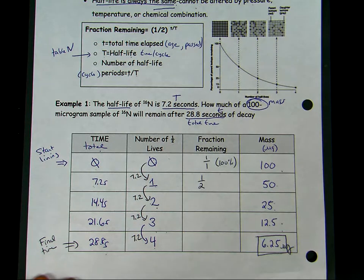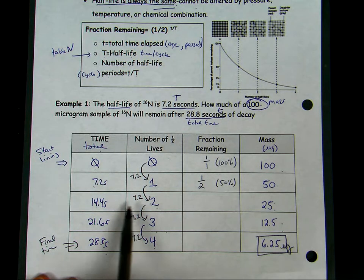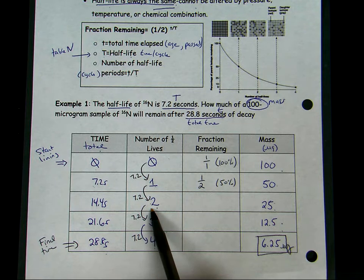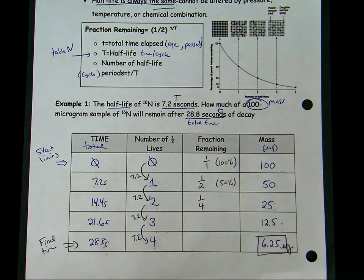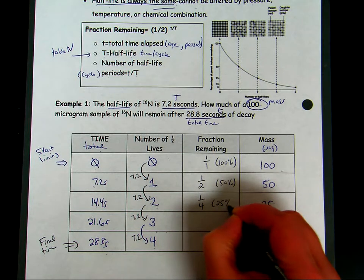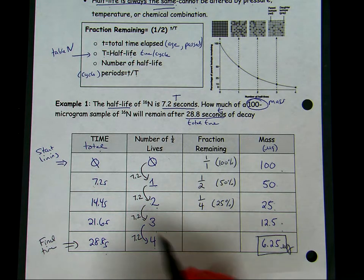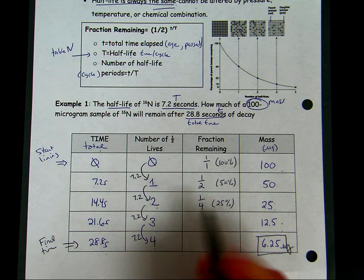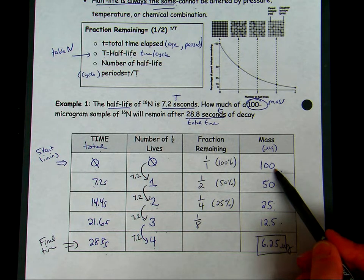At the end of cycle 2, we now have only one-fourth of our original radioactive sample still present, which means we only have 25 percent remaining radioactive. At the third cycle, now we only have one-eighth of our original mass of the sample still radioactive and present, so that means that we are at 12.5 percent.